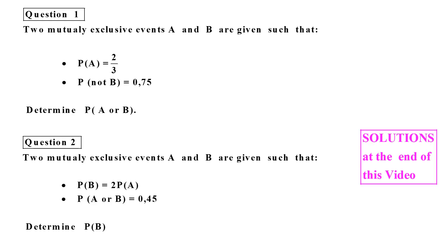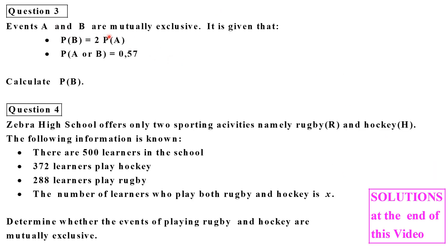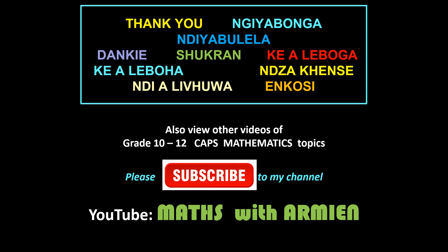Now let's look at the exercise worksheet. Question one: two mutually exclusive events are given and we determine P(A or B). Question two: two mutually exclusive events with some given information — determine the probability of one of the events. Question four uses a Venn diagram to determine whether playing rugby and hockey are mutually exclusive. Solutions are at the end of the video.